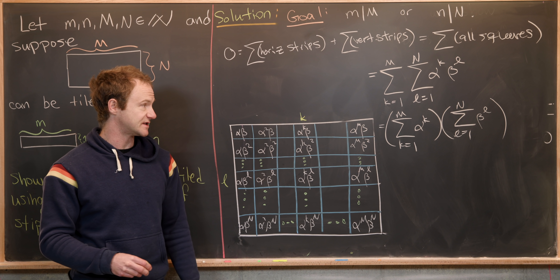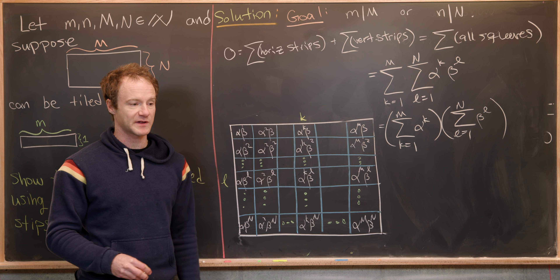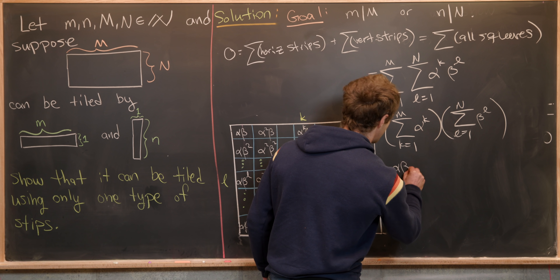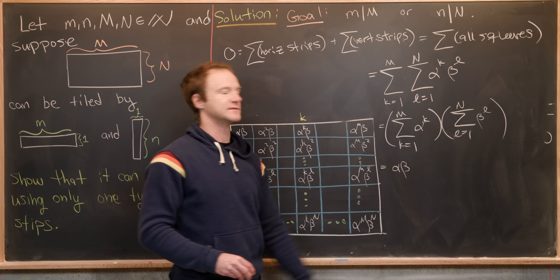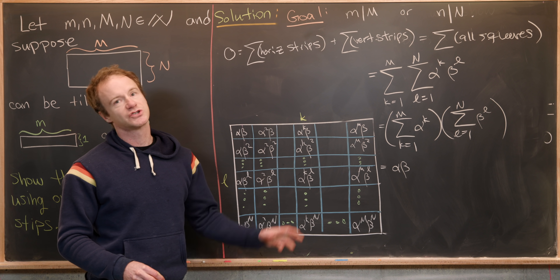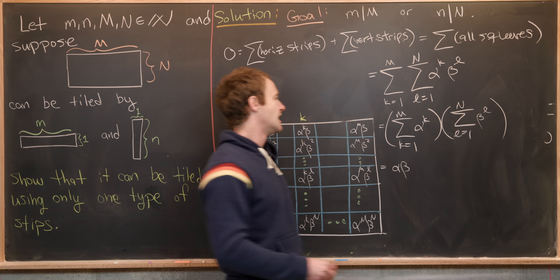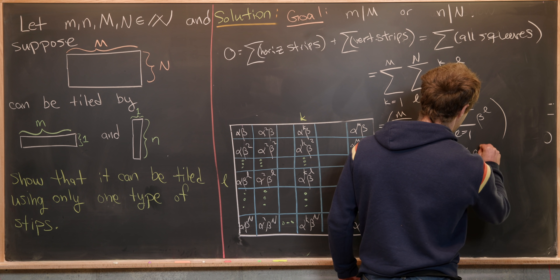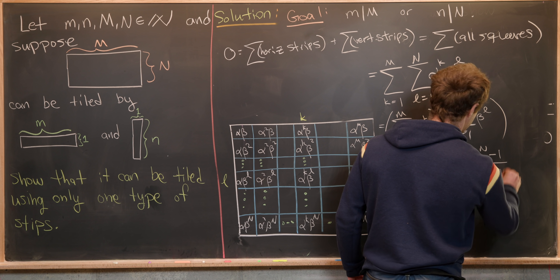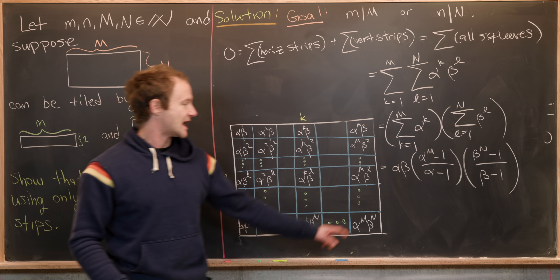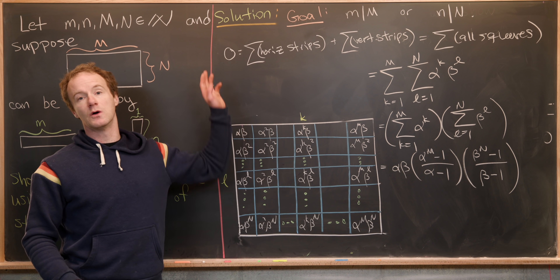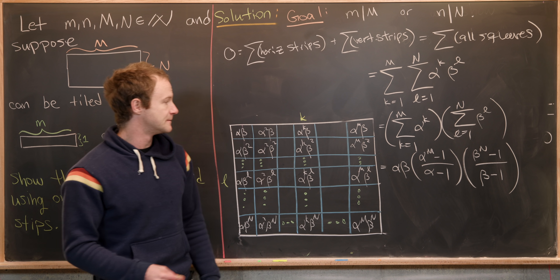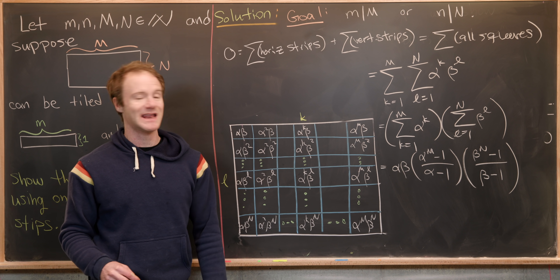Both are finite geometric series. Using the geometric series formula, this becomes alpha times beta times (alpha^M − 1)/(alpha − 1) times (beta^N − 1)/(beta − 1). This product of four objects equals zero, and since alpha and beta are nonzero (they're primitive roots of unity), either alpha^M − 1 = 0 or beta^N − 1 = 0.